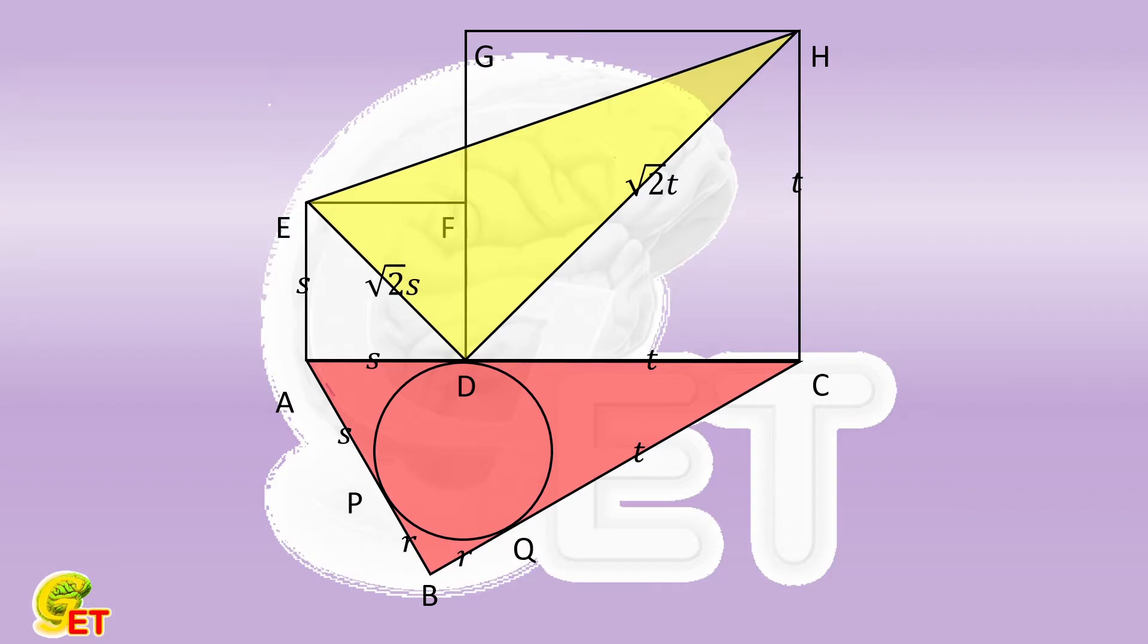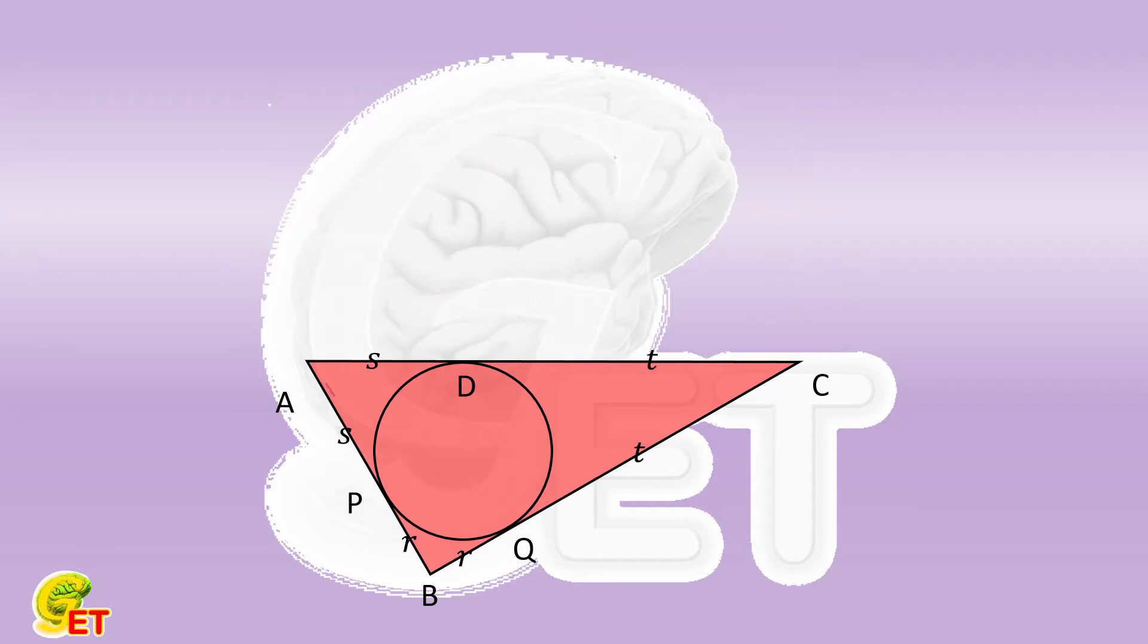Before taking a look at the area of the first triangle, let's refer to the Pythagorean theorem. The square of s plus t equals to the square of s plus r add the square of t plus r. Expanding it, we have s² + t² + 2st = s² + 2sr + r² + t² + 2tr + r².